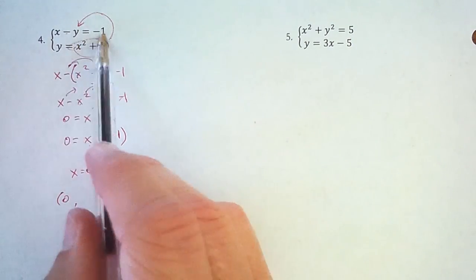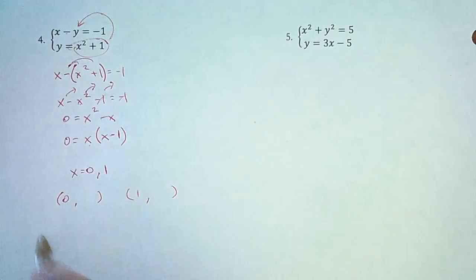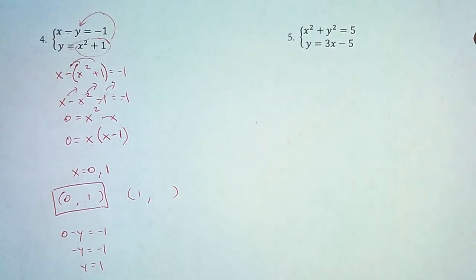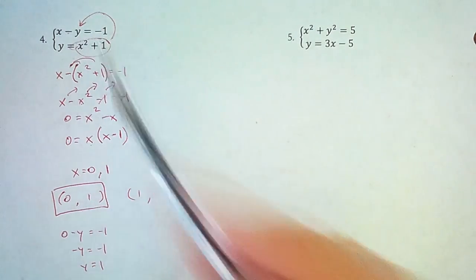So if I put in a 0, let's say into this top equation, 0 for x, 0 minus y equals negative 1. So that's negative y equals negative 1. And that means that positive y equals positive 1. So (0, 1) is one point of intersection of this line and this parabola.